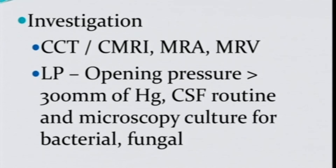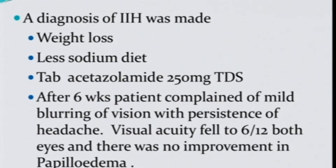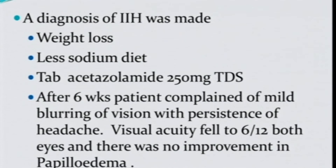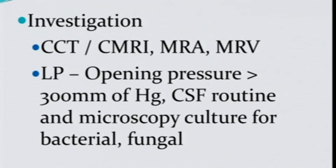We got imaging done — contrast MRI gives better detail of the brain. We also requested MRA and MRV. The imaging showed features of idiopathic intracranial hypertension in the form of empty sella syndrome and dilatation of meningeal spaces around the optic nerve, as shown by the arrows. The next step was to measure the CSF pressure.